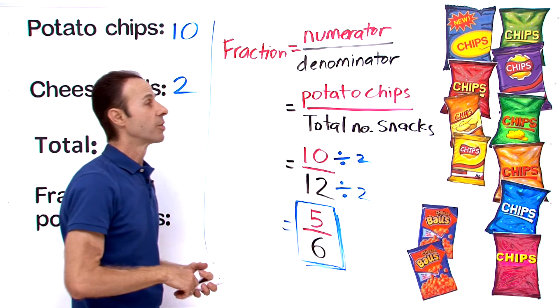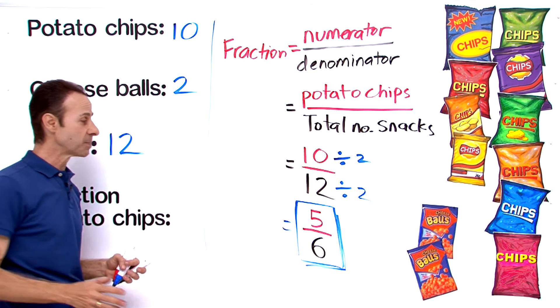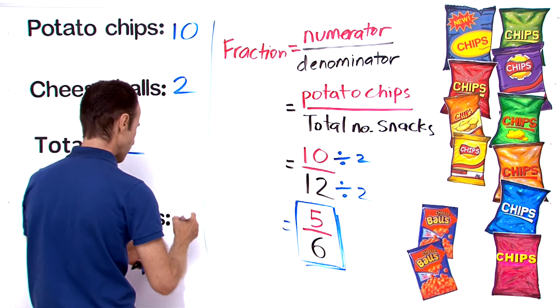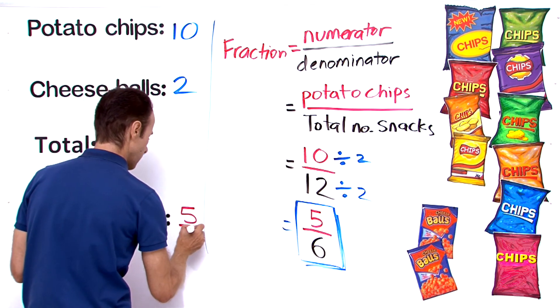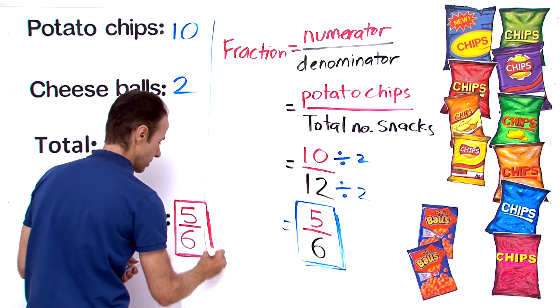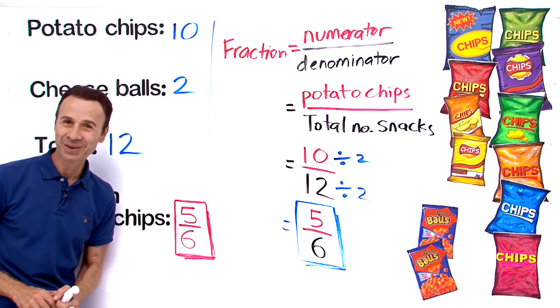So the fraction of the snacks that are potato chips is 5 sixths. So over here the answer is 5 sixths. There you go, hope that helps.